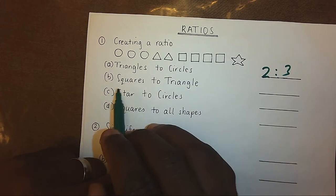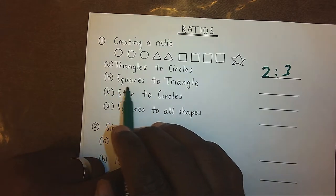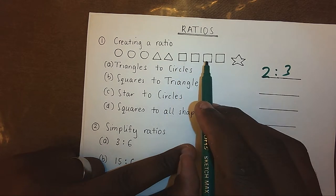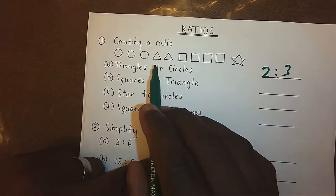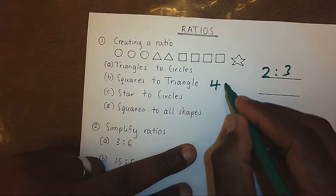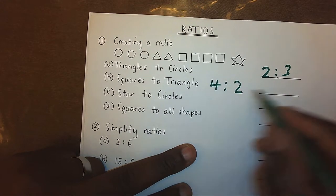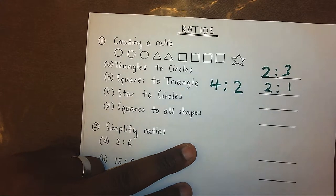Now, when you look at the squares to triangles, we have 4 squares and we have 2 triangles. That means 4 ratio 2, which we can simplify to 2 ratio 1.